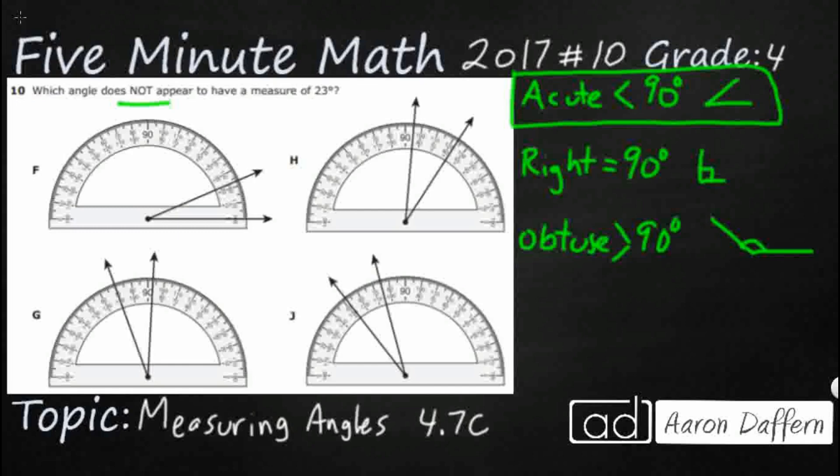So let's start with F. F at least starts with a zero, so we can start there. We've got a zero here, and we're going to use the inside because the inside is zero. And so we've got zero, 10, 20, and then it looks like it's just a little bit past 20. That hash mark is 25. So it's between 20 and 25, and it looks like that probably is 23 degrees.